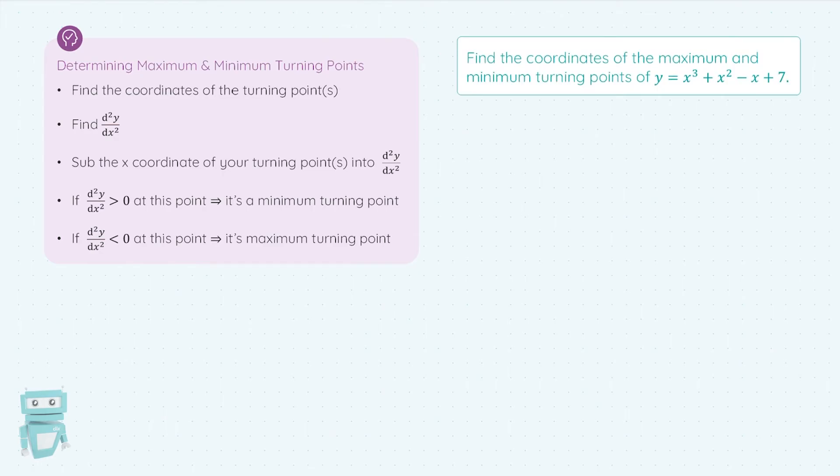So let's throw a question up and see how this is applied. I'm asked to find the coordinates of the maximum and the minimum turning points of y equals x cubed plus x squared minus x plus seven. We know how to find the turning points — that is, we find the first derivative, we let it equal zero, we solve for x, and then whatever x values we get, we sub them back into the original function to find the corresponding y values.